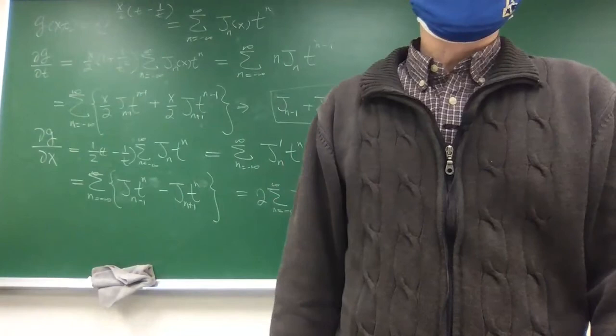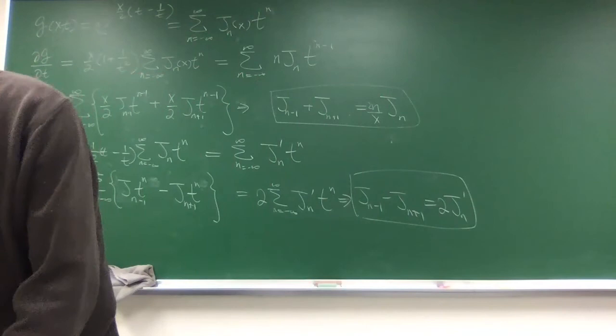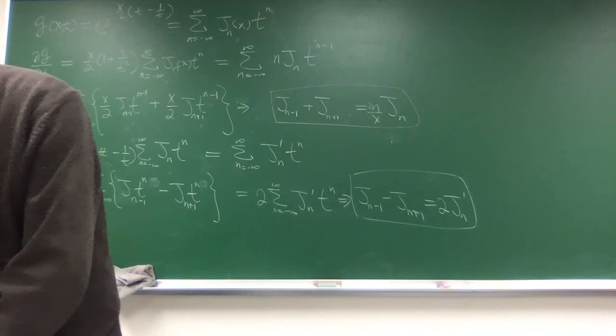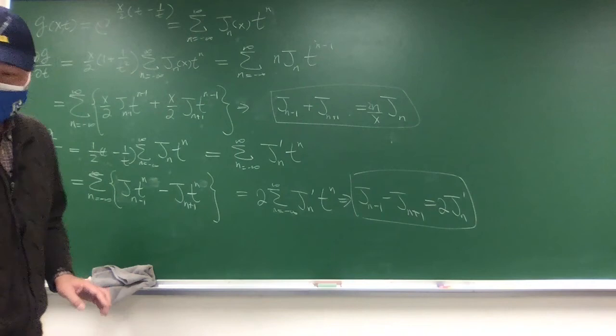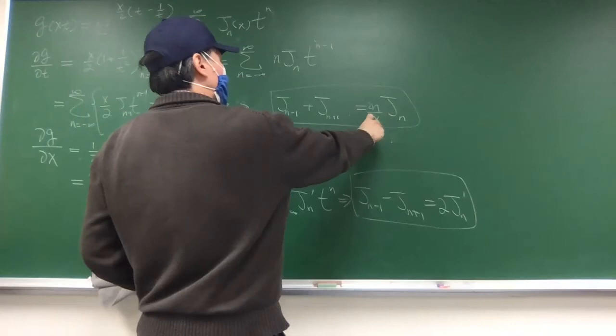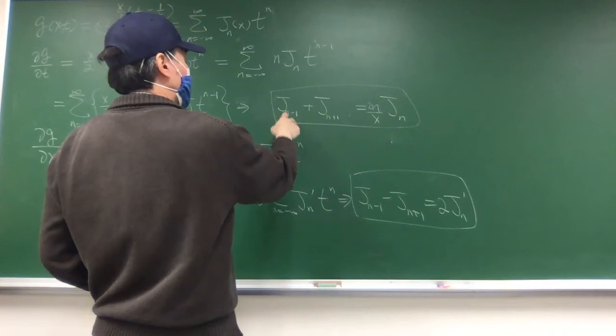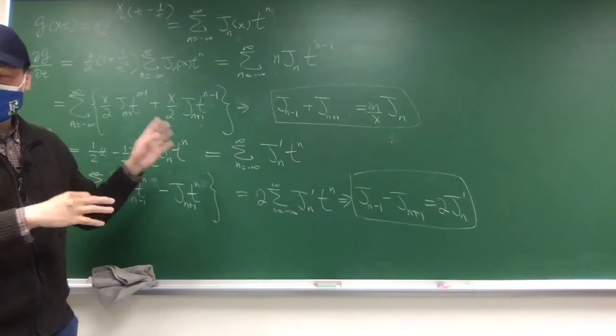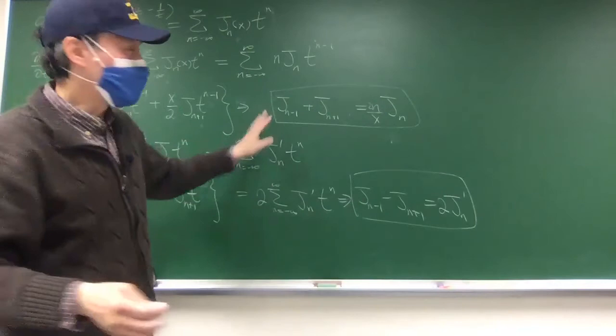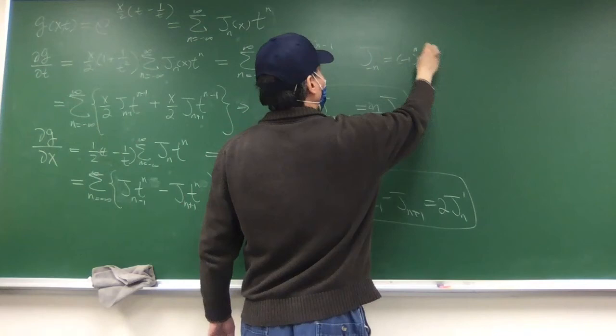This covers sections 14.7, 14.8. Section 14.9 is a simple example: set n equals zero. With n equal to zero, the right-hand side is zero, so J_{-1} plus J_1 equals zero, meaning the two are related by a negative sign. This is the special case where J_{-n} equals minus J_n.